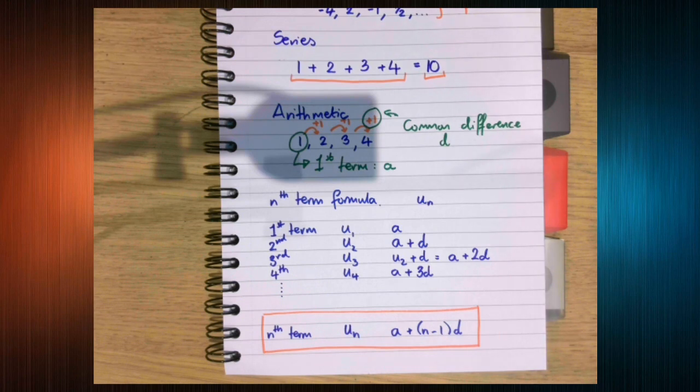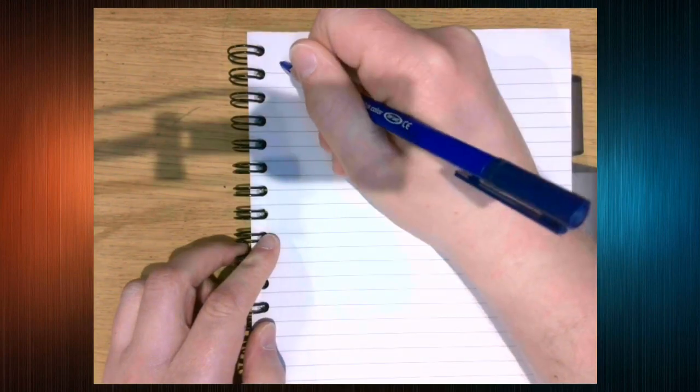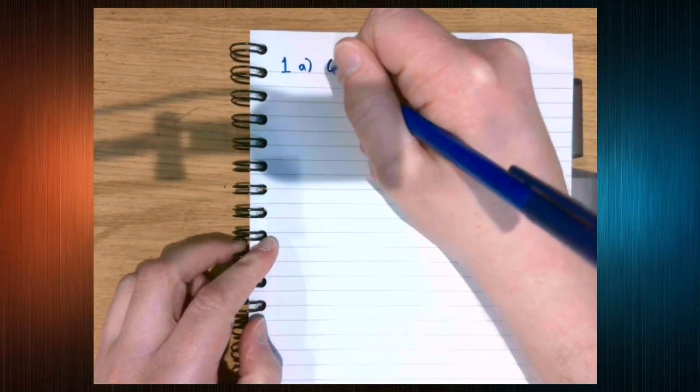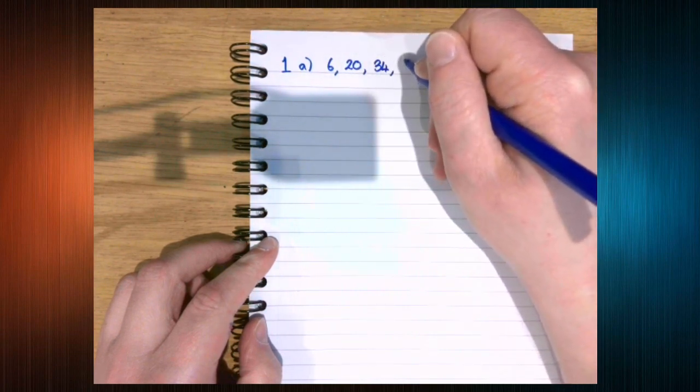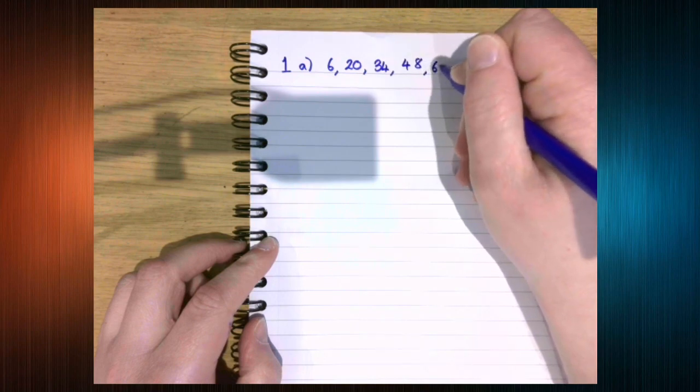So hopefully you've got the first page or you can see the first page from the workbook for arithmetic sequences and series. As I said, it is available on Moodle. We're going to have a look at question 1. So find the nth term of each arithmetic series. So we've got 6, 20, 34, 48, 62.